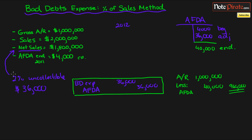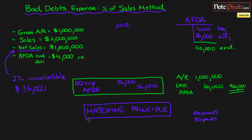Before we end this tutorial, sometimes your book will say the sales method does the best job of demonstrating the matching principle. The reason is that they're matching Bad Debt Expense directly with sales, by multiplying the estimated bad debt percentage by the sales. So you're doing the best job of matching expenses with revenues, which is exactly the definition of the matching principle.